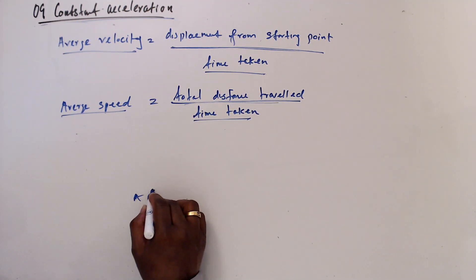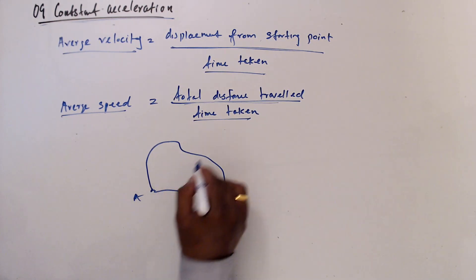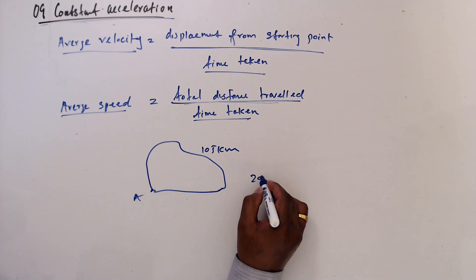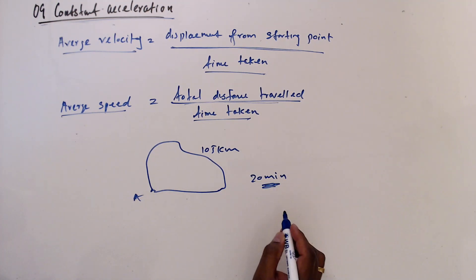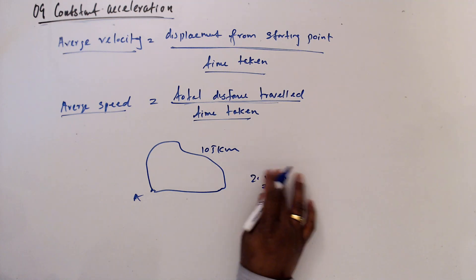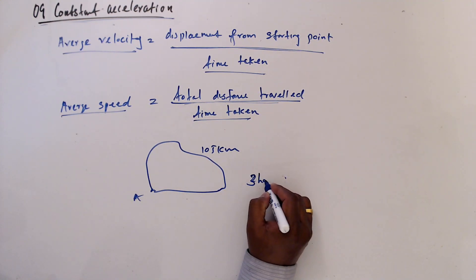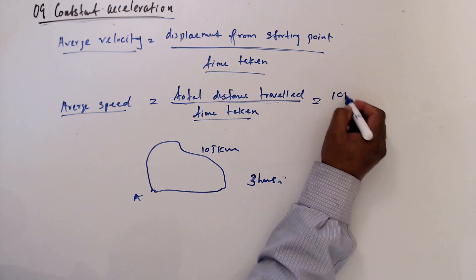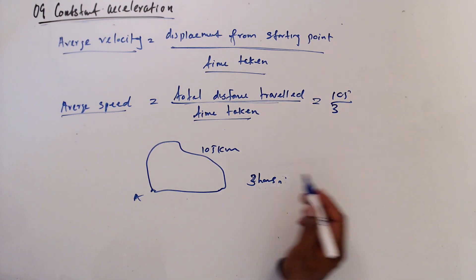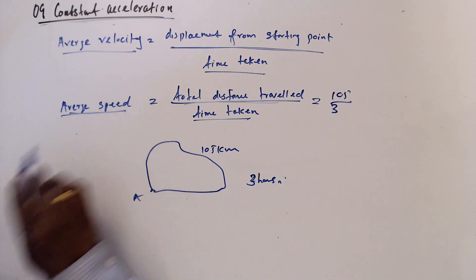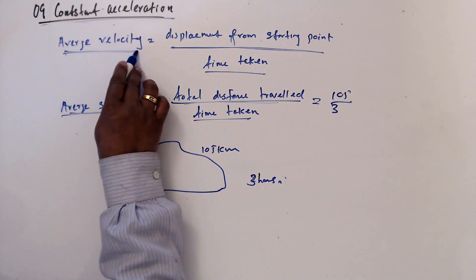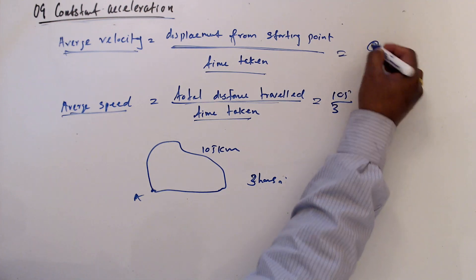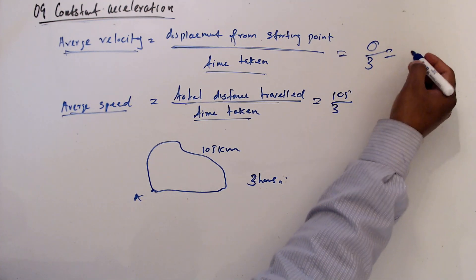Returning to our previous example: starting from and coming back — 105 kilometers total — let's say the journey takes 3 hours. Total distance 105 divided by 3 gives the average speed. But the displacement from the starting point is zero, so average velocity is zero divided by 3, which is zero.